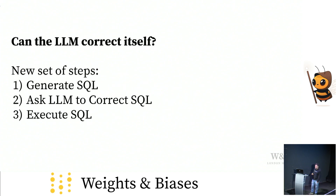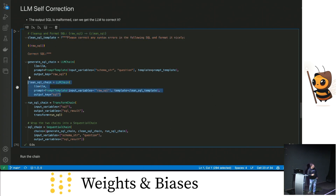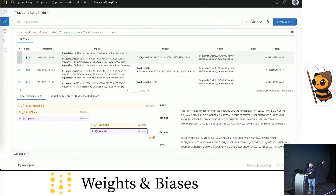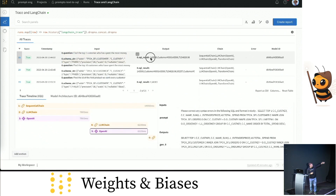The idea to make this better: it turned out some of the SQL was malformed. The solution was to generate the SQL, then ask the same LLM 'you generated this SQL — could you please debug your own SQL and make it better?' and then execute that improved SQL. That's the new Langchain chain. We insert a clean SQL chain step that says 'please correct any syntax errors in the following SQL, which you actually just generated for me.' And you can see that all these runs are now successful.